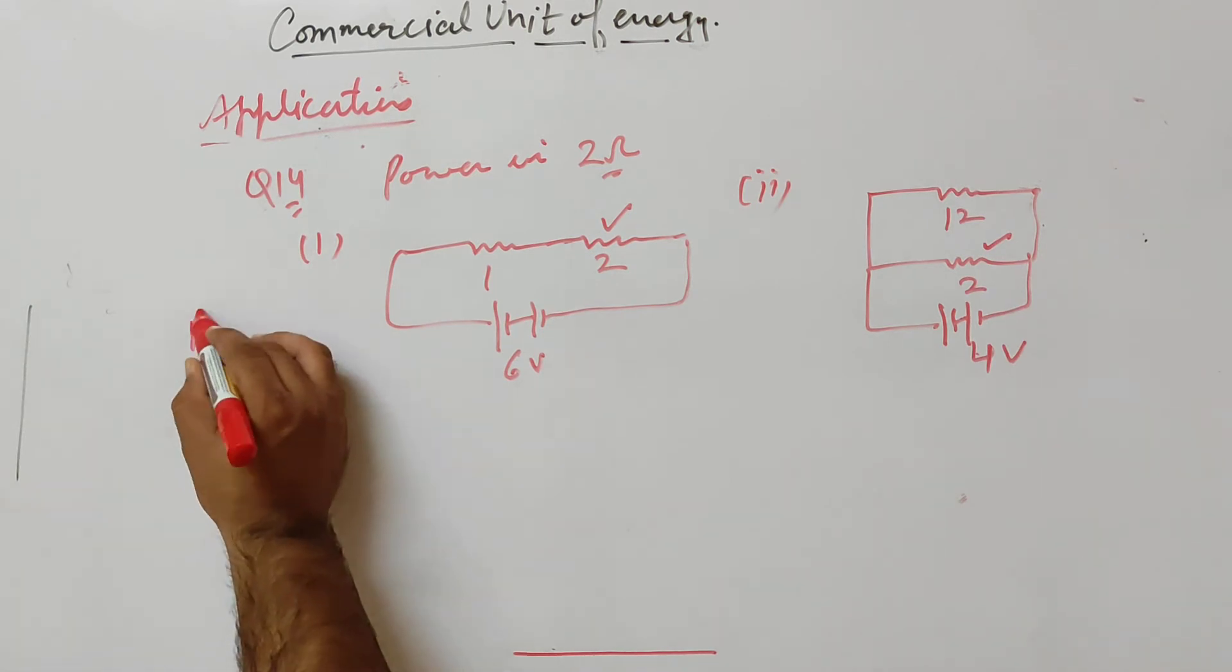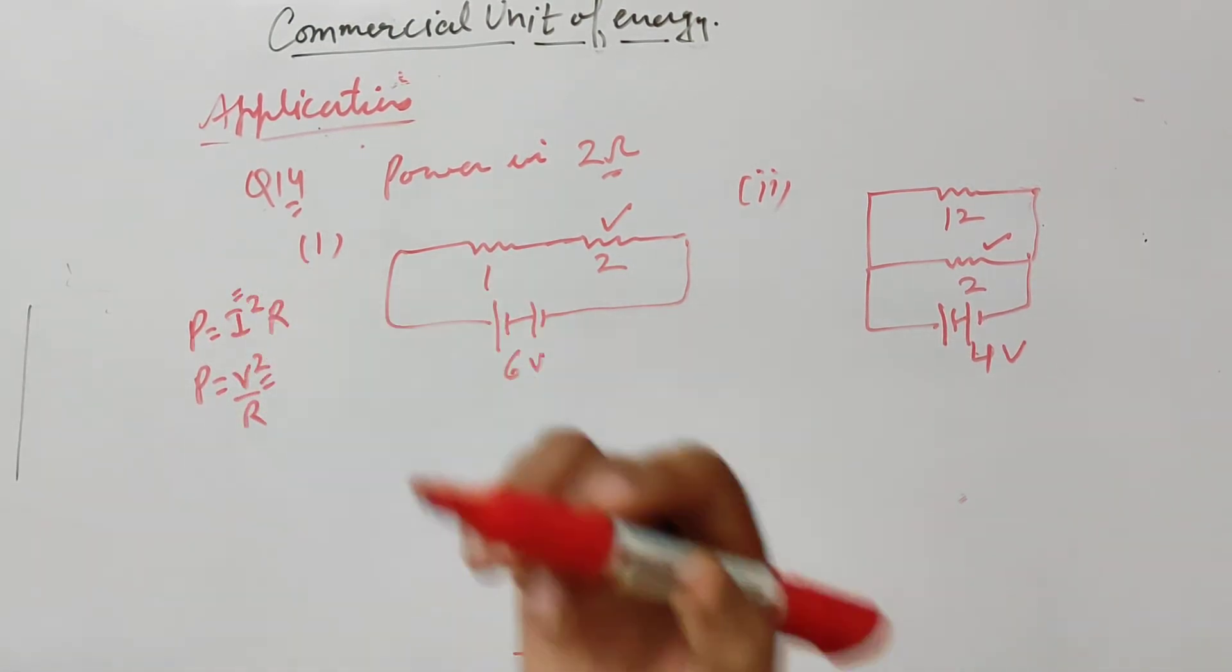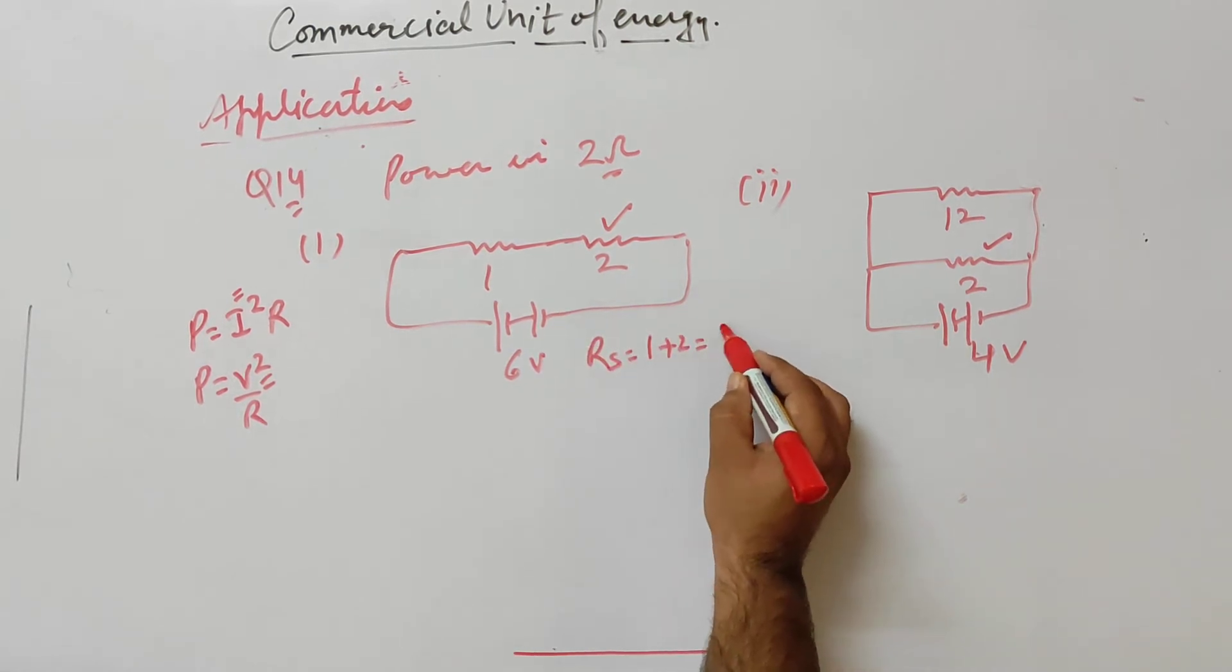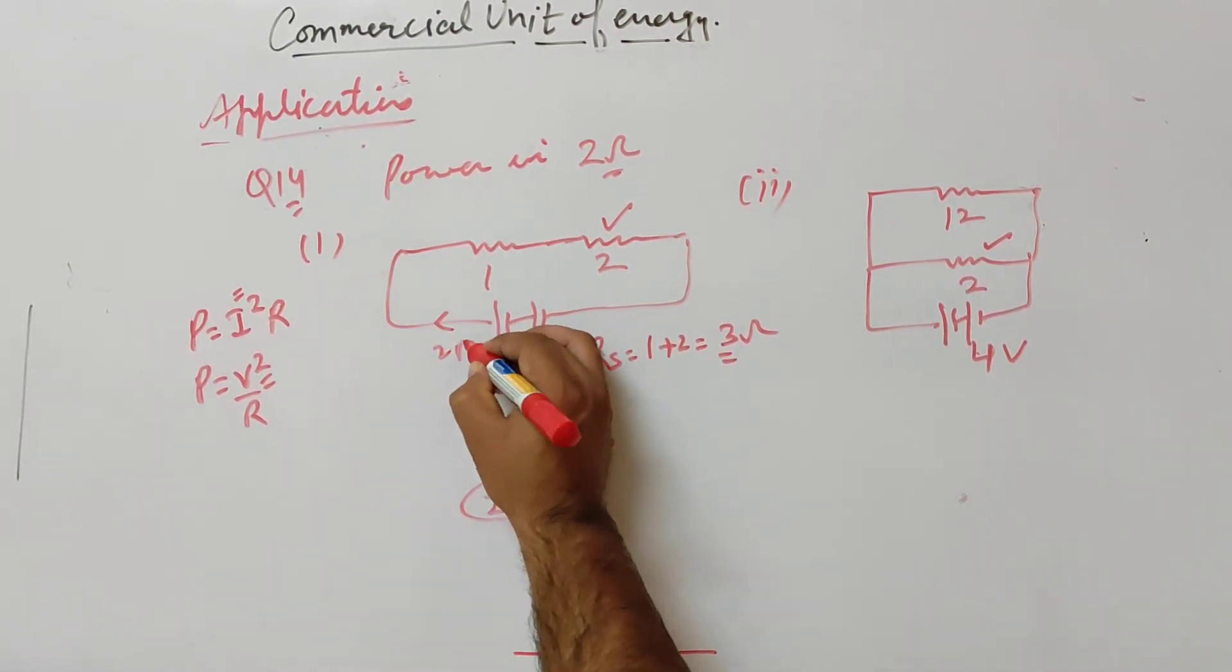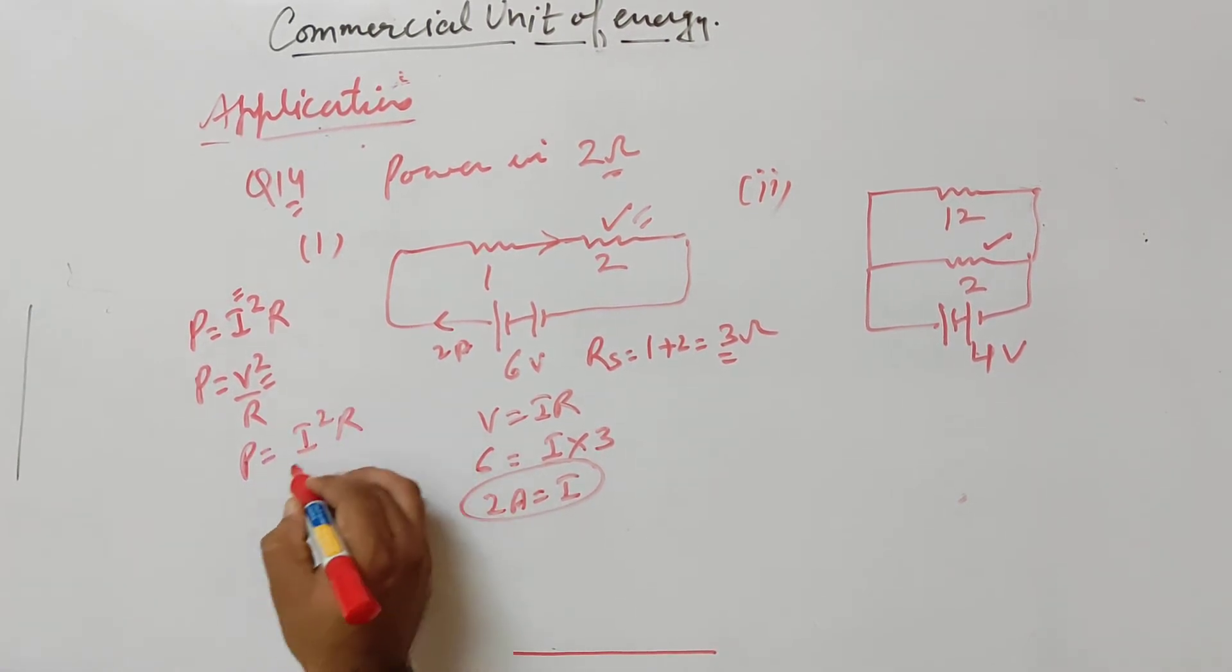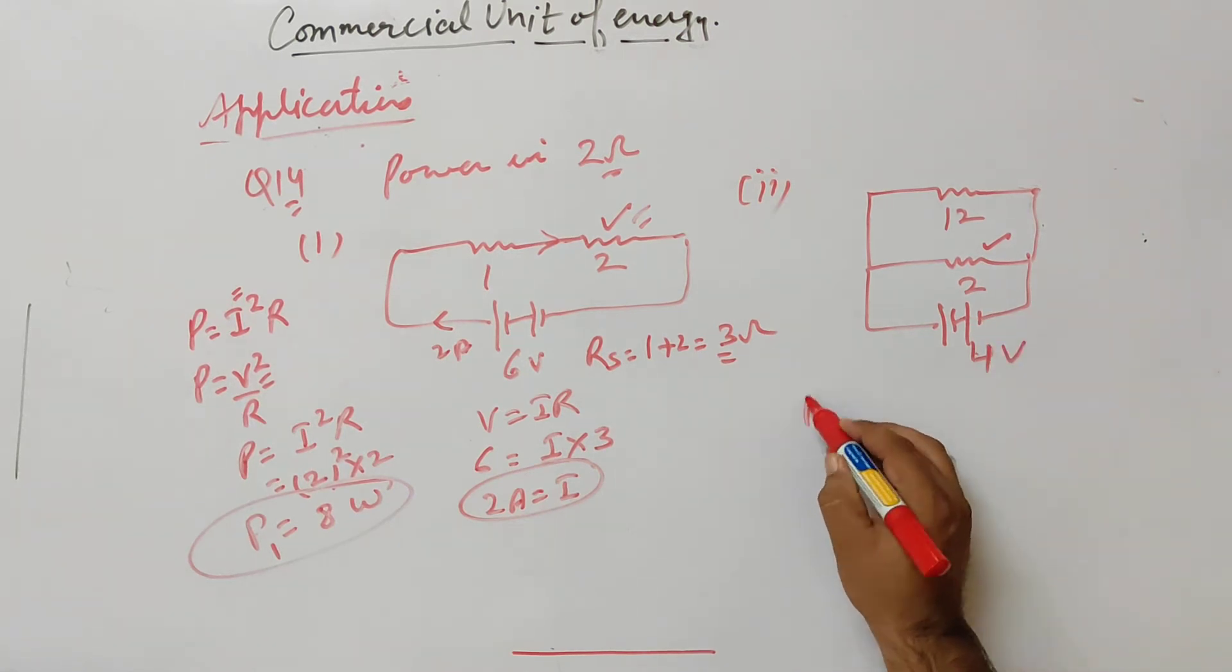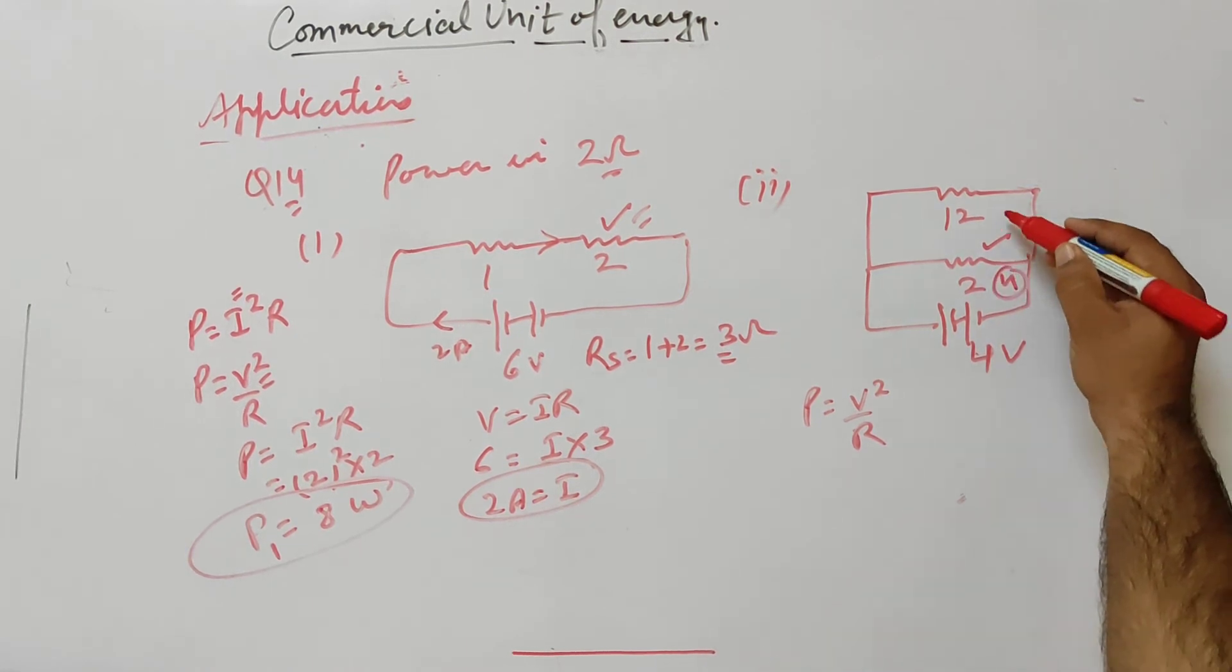First, which power formula to use? P equals I square R or P equals V square by R? For voltage we need to find current. Net resistance is 1 plus 2 equals 3. V equals IR, so 6 equals I into 3. I is 2 ampere.